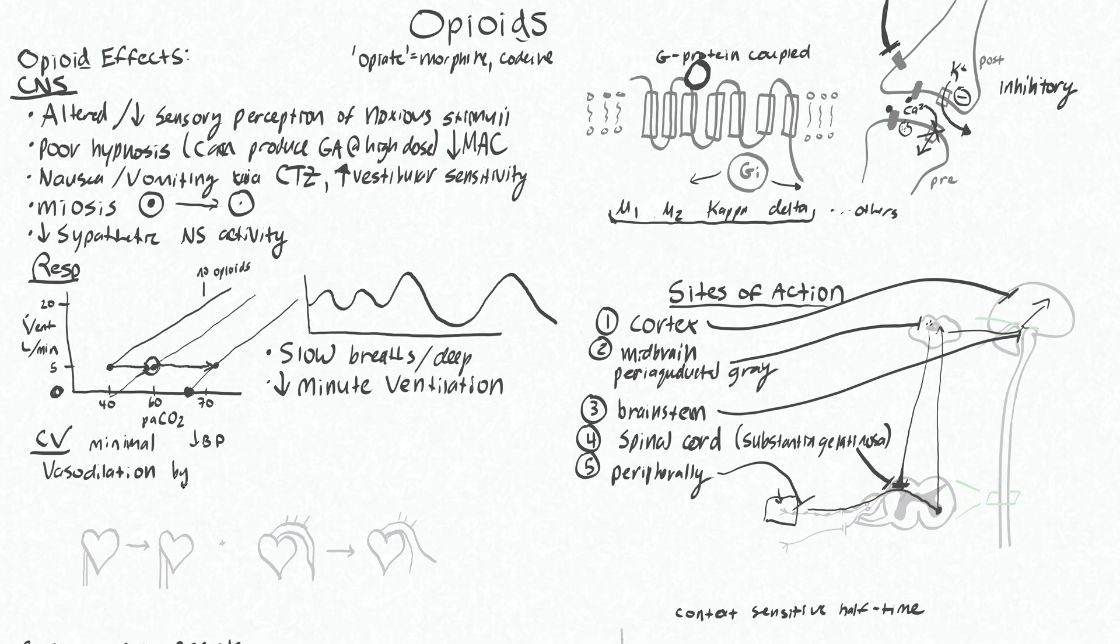And you can think of that as being from the sympathetic outflow decrease that you intentionally caused by giving someone an opioid. That will in two ways decrease your blood pressure, both by decreasing your preload.